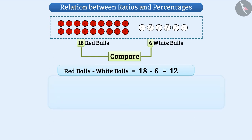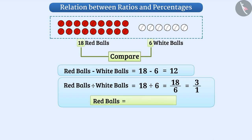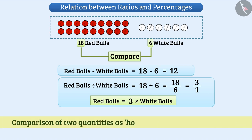We can also compare them by division: number of red balls divided by number of white balls, which is 18 divided by 6, giving us 3 divided by 1 as a fraction. This tells us that the number of red balls is 3 times the number of white balls. Comparison of two quantities as 'how many times' is called a ratio.